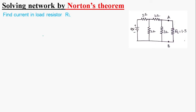Hi guys, now we will solve this network by using Norton's theorem. This is the load resistance RL which is connected to the circuit, and IL is the load current flowing through the circuit.